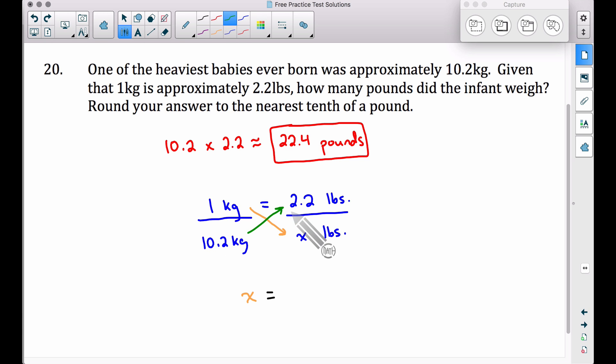We want to take 10.2 and multiply it by 2.2. Well, that's exactly what we did up here, right? 10.2 times 2.2 is 22.44.